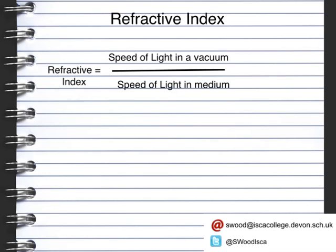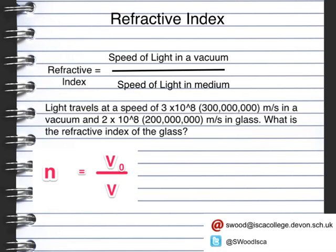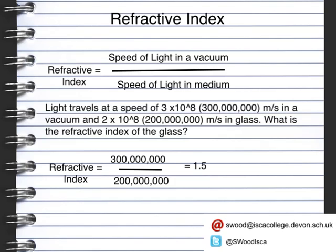For example: light travels at 3×10⁸ metres per second (300 million m/s) in a vacuum, and 2×10⁸ metres per second (200 million m/s) in glass. What is the refractive index of glass? Putting it into the equation: refractive index equals 300 million divided by 200 million, which equals 1.5. Looking at the units, metres per second divided by metres per second means that refractive index has no units.